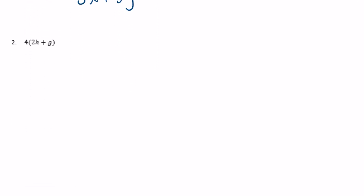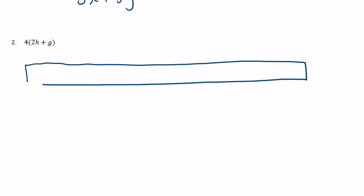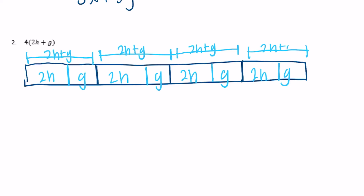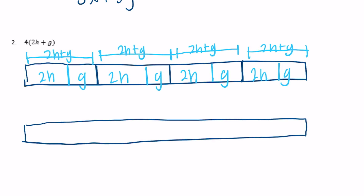For 4 times (2h plus g), we draw 4 groups of 2h plus g. Then combining the h's and g's: we have four 2h groups, which is 8h, and four g's, which is 4g.